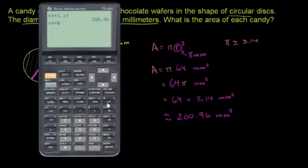It's up here in this yellow. So I'll do this little second function. Get the π there. Every calculator will be a little different. But 64 times π. Now we're going to use the calculator's internal approximation of π, which is going to be more precise than what I had in the last one.